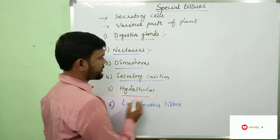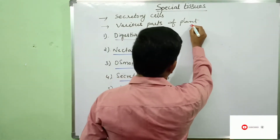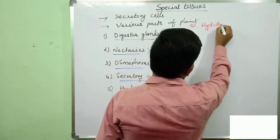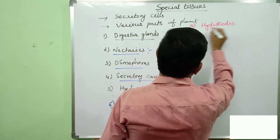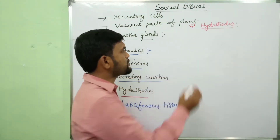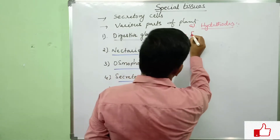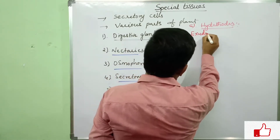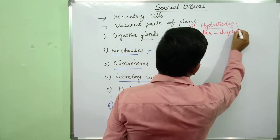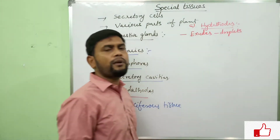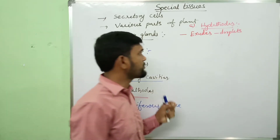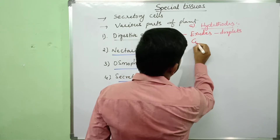Coming to the fifth one: hydathodes. In some plants, water exudates are released in the form of droplets from the margins or leaf apex. This process is called guttation.